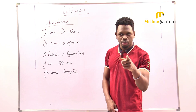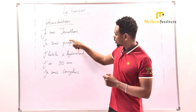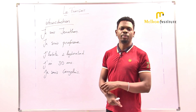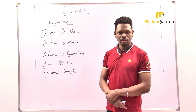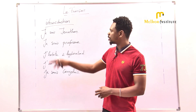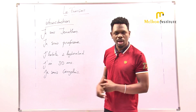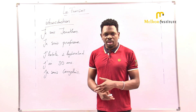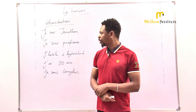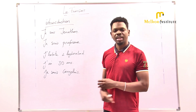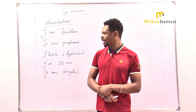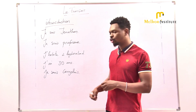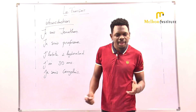Now it's up to you to change these according to your information. For example, you can say: je suis Kuma, je suis ingénieur, j'habite à Delhi, j'ai 25 ans, je suis Indien.